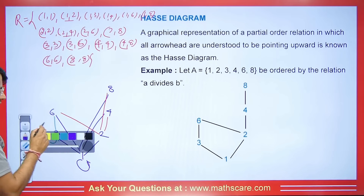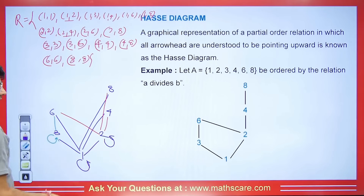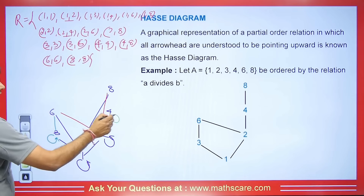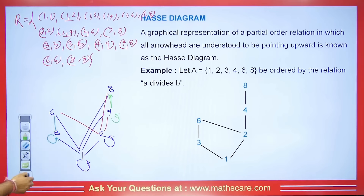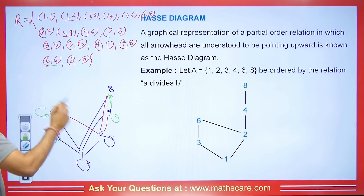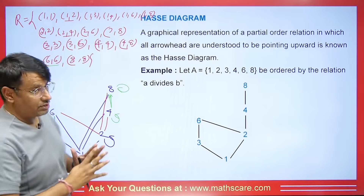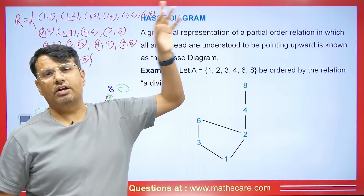For 3: 3 is dividing 6 and itself. Each number is dividing itself — this is understood, no need to write it. For 4: 4 is dividing 4 and also 8. For 6: 6 divides itself. 6 is dividing 6 and 8 is dividing 8.